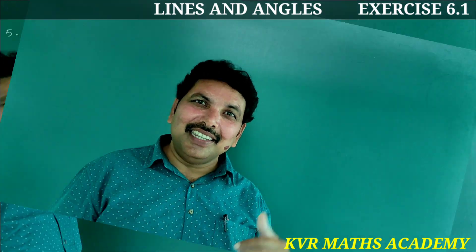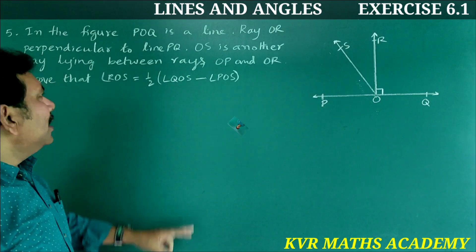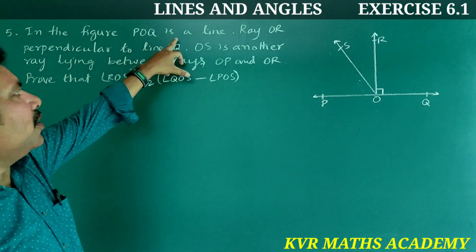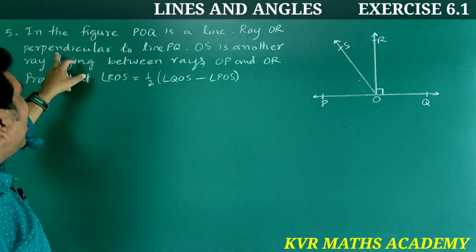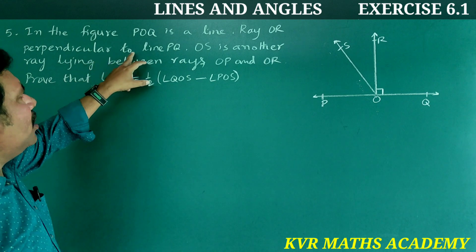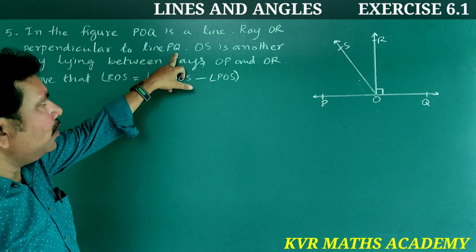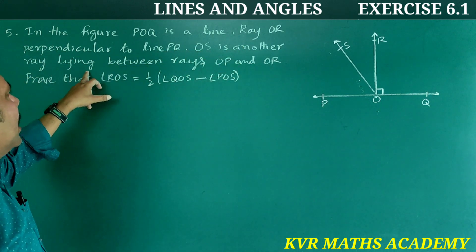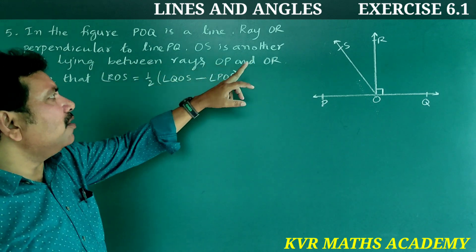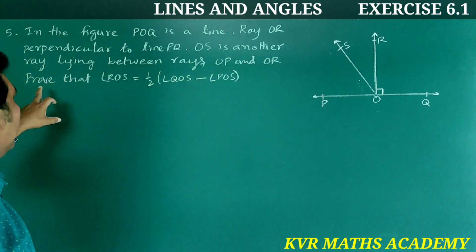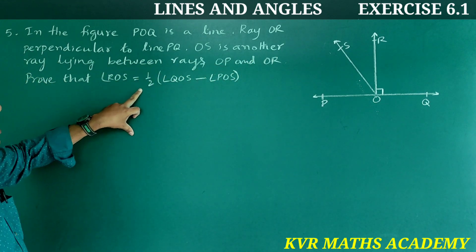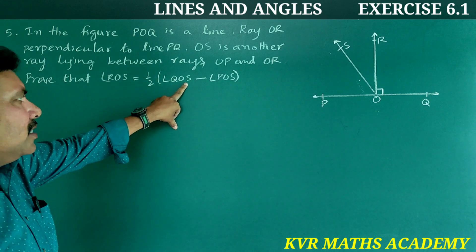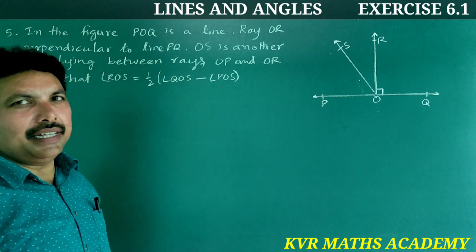Yes, let's go through this. Fifth question: In the figure, POQ is a line, ray OR is perpendicular to line PQ. OS is another ray lying between rays OP and OR. Prove that angle ROS is equal to half of angle QOS minus angle POS.